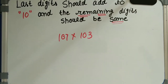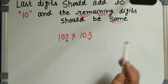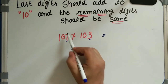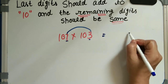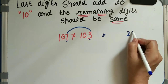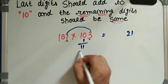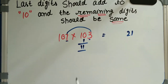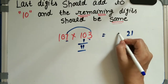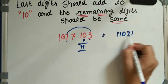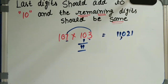I think everyone now understands this concept. Here: 7 plus 3 equals 10, and we multiply 7 into 3 which equals 21. Then we add 1 to the remaining digit 10, giving 11. So 11 into 10 equals 110. That means our answer is 11,021.